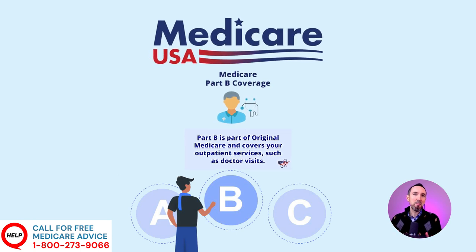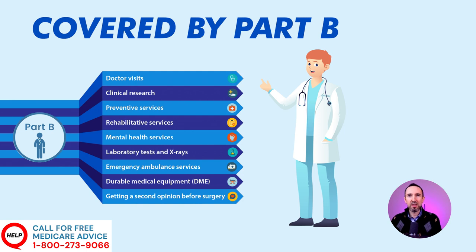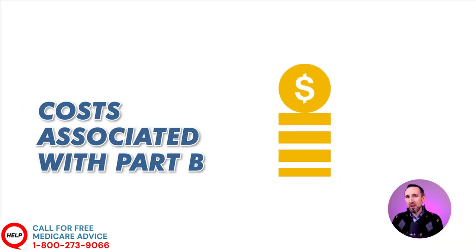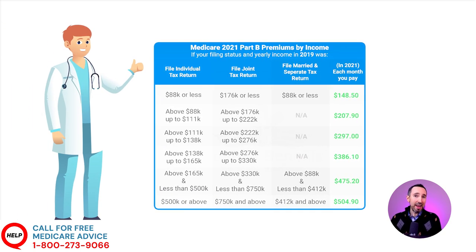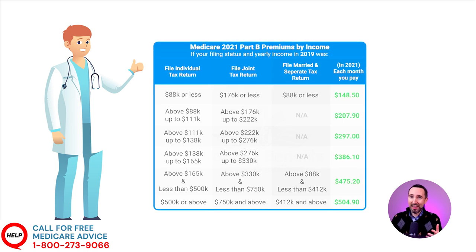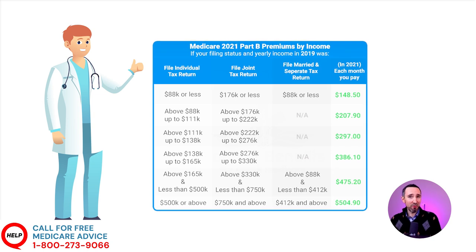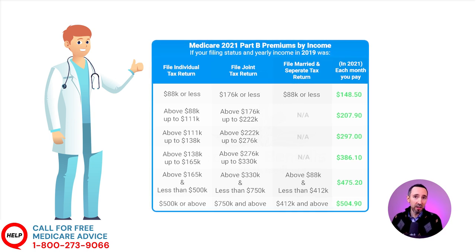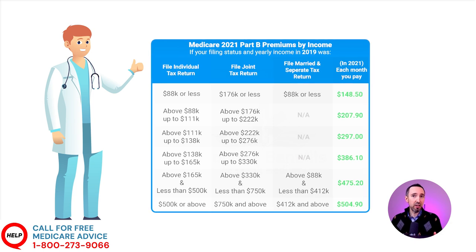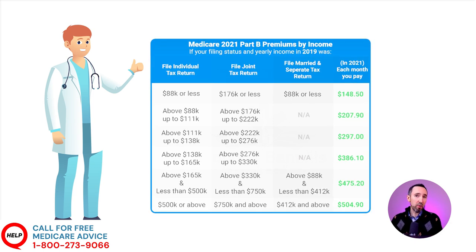Part B covers medically necessary services like doctors, outpatient appointments, tests, outpatient care, home health services, durable medical equipment, and preventative services like early-stage treatment or vaccines. Part B will pay for any doctors or health providers that accept Medicare, and you won't have a restricted provider network. The standard premium for Part B in 2021 is $148.50 per month. For individuals making over $88,000 or joint filers above $176,000, the premium will be higher.